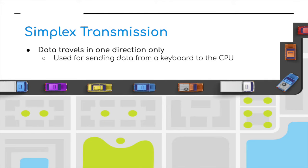Simplex transmission is where data travels in one direction only. For example, it's used for sending data from a keyboard to the CPU inside the computer — the data only goes in one direction, and the CPU does not send information back to the keyboard.